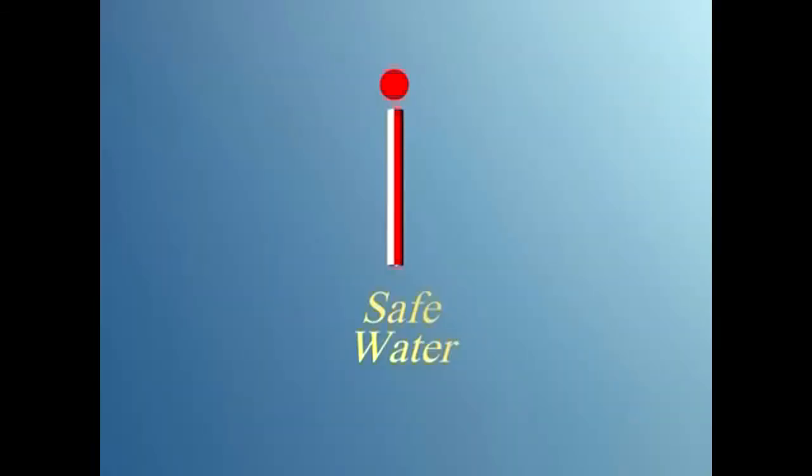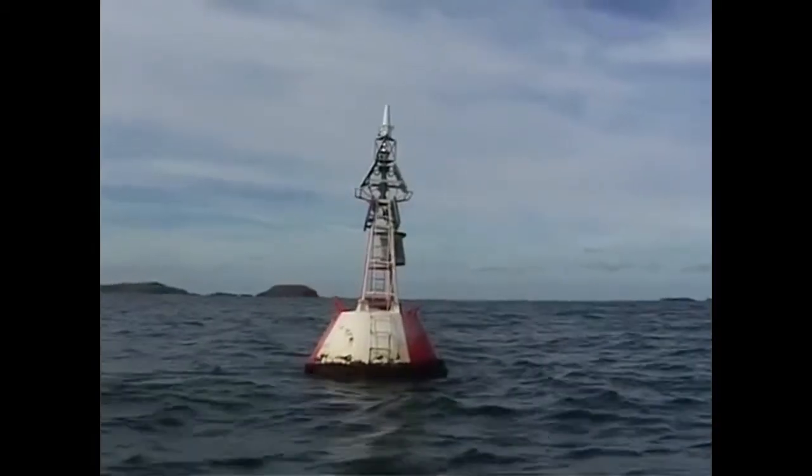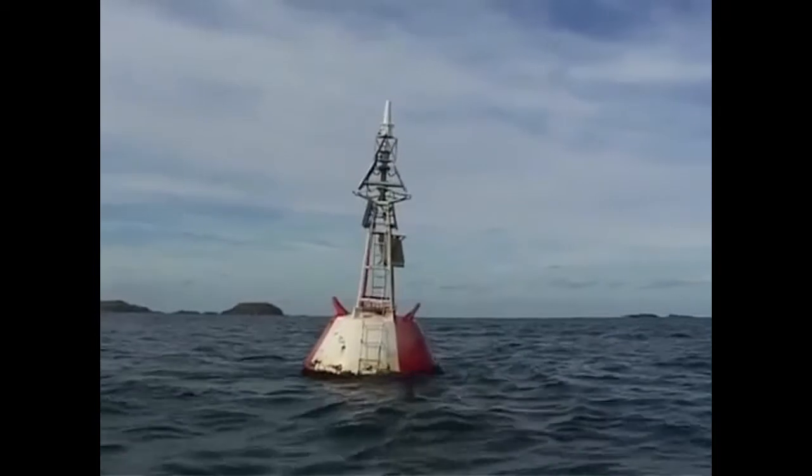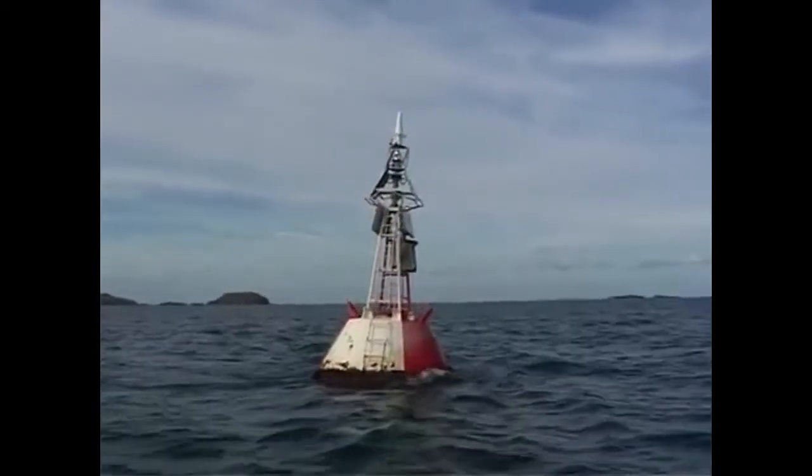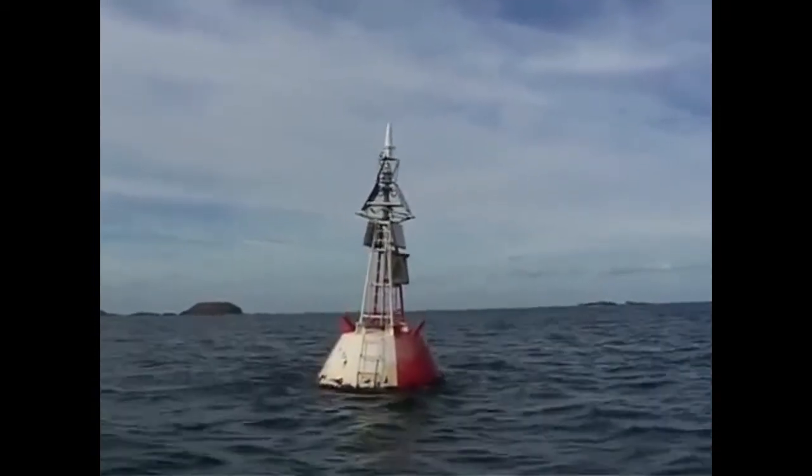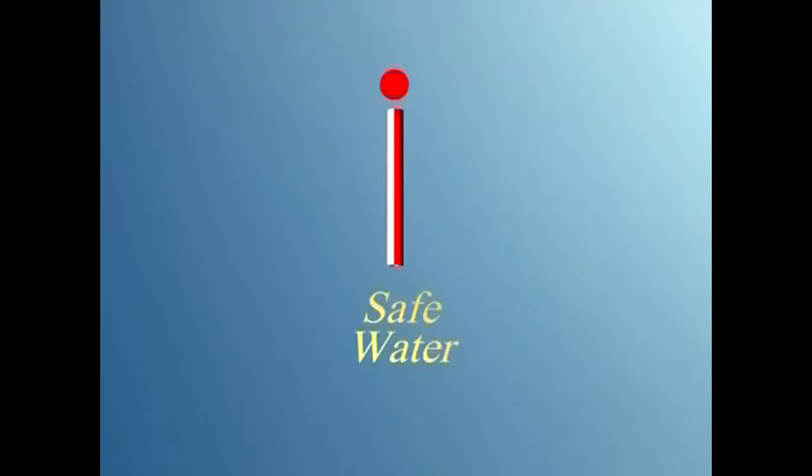Safe water marks can be spherical, pillar, or spar-shaped buoys. They are always red and white in vertical stripes. They indicate there is safe navigable water all around the mark. The top mark, if fitted, is a red sphere.